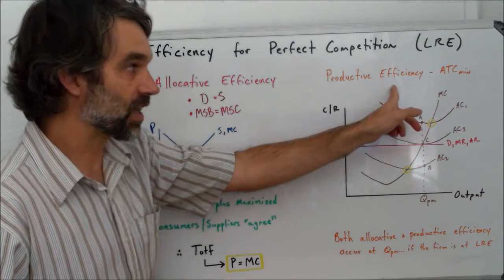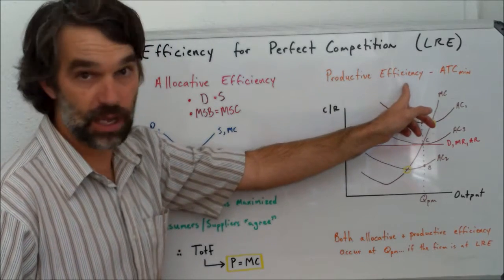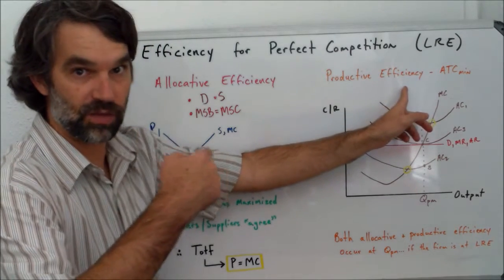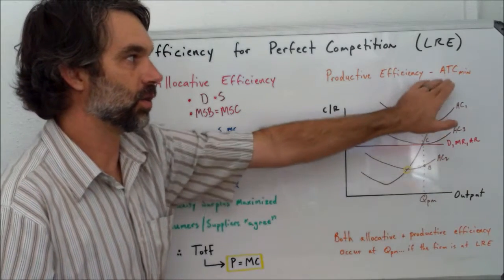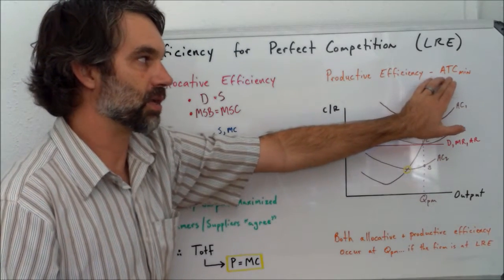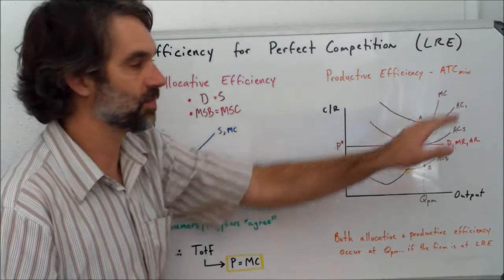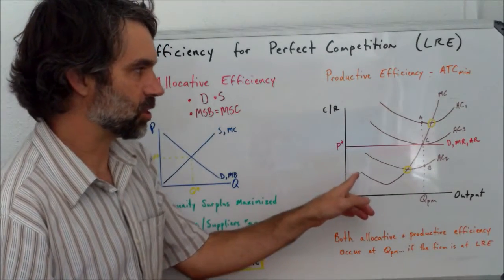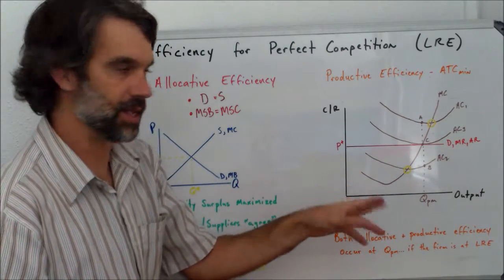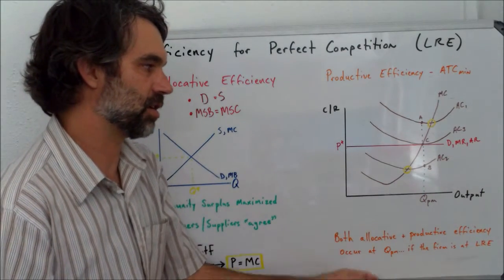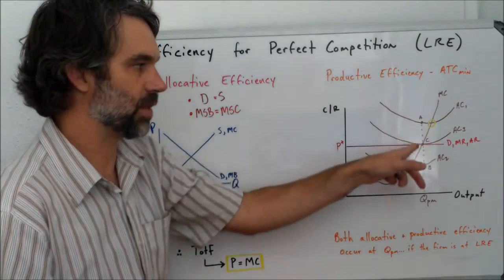Remember that productive efficiency occurs either at the highest point of average production, but since we're not able to see that here, we'll look instead for the minimum point of average total costs. Keep in mind the relationship that marginal cost has with the average cost curve. That is, when it crosses through the average cost curve, it crosses through at the minimum point.